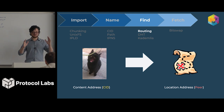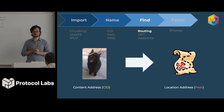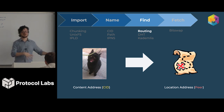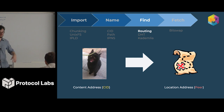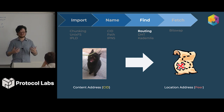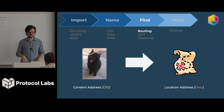Now we've covered how to import files and how to name files. Finally, we get to the other side of the equation — I'm trying to actually find a file and then download it. How do I find a file? We use this thing called routing or content routing.